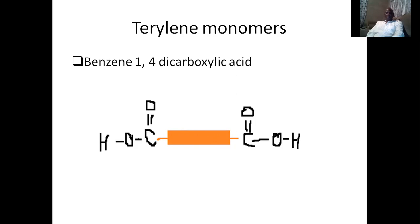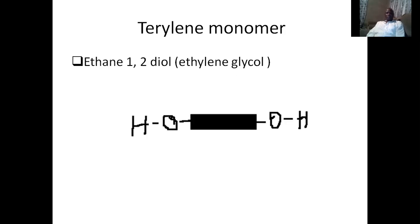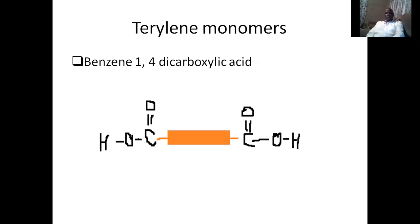The other monomer, which contains a hydroxy group, is ethylene 1,2-diol, which previously used to be known as ethylene glycol. It has a hydroxy group — oxygen and hydrogen — at the end of the rectangle. It is shown here with a different coloration, and the intermediate molecules hidden inside are different from those of the other monomer with the carboxylic group.